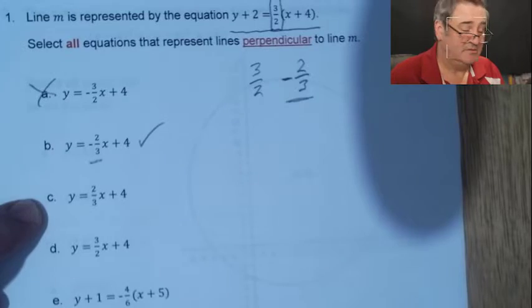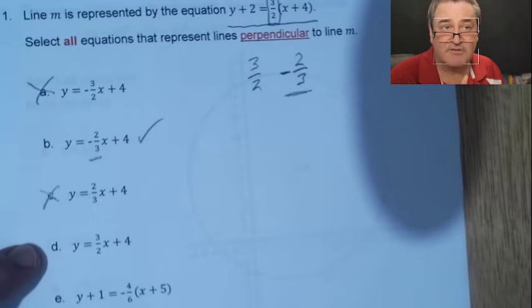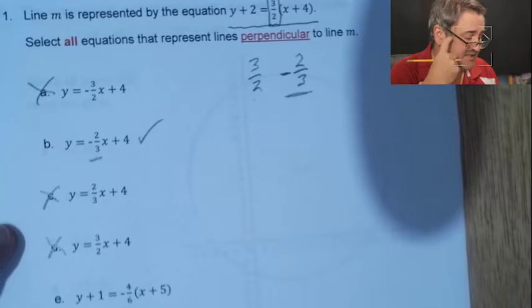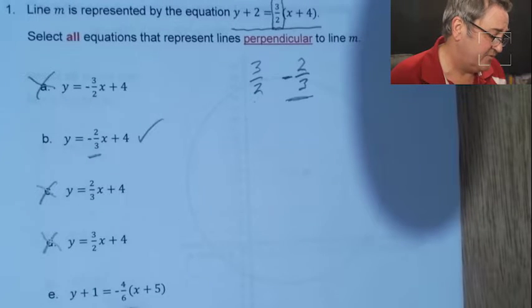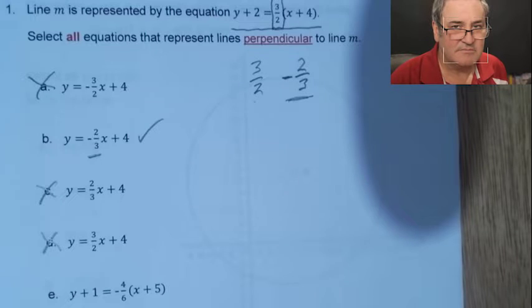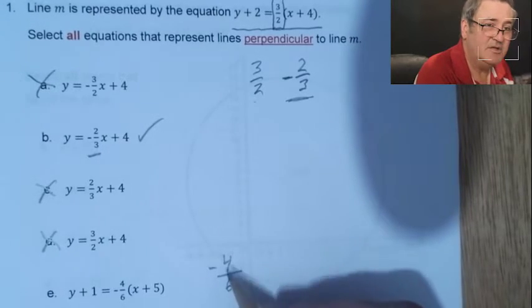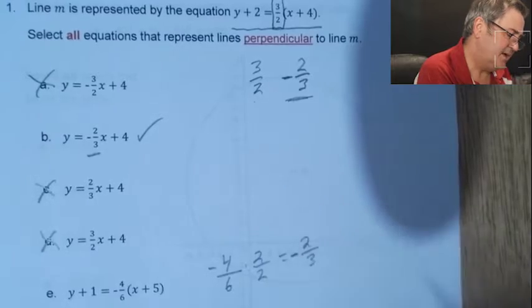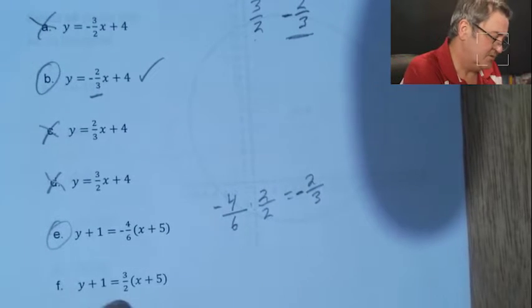The next option has a positive 2/3 — no negative — so that's not it. Then y = (3/2)x + 4 is parallel — same slope. How about y + 1 = (-4/6)(x + 5)? Negative 4/6 can be simplified: divide both by 2, which gives negative 2/3. That is a negative 2/3 slope, so that one is also perpendicular. The last option, y + 1 = (3/2)(x + 5), has the original slope 3/2 — not perpendicular.